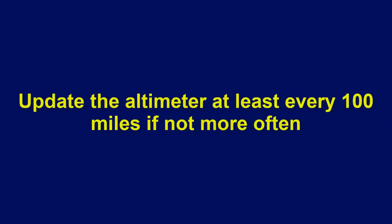A good practice is to update the altimeter setting at least every 100 miles of flight, if not more often. If you don't keep the setting accurate, you will be flying higher or lower than where you think you are.